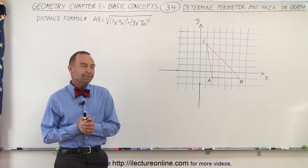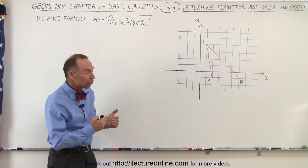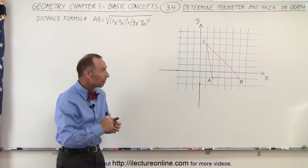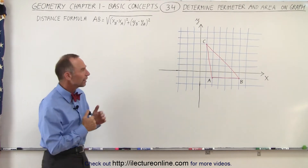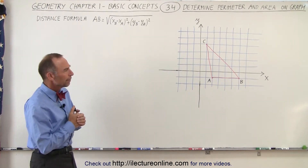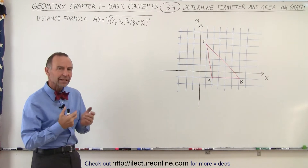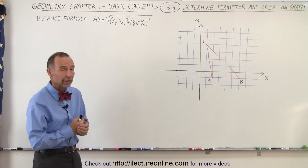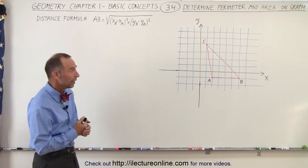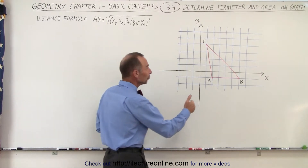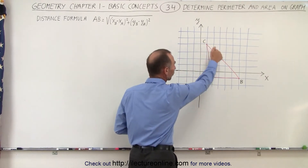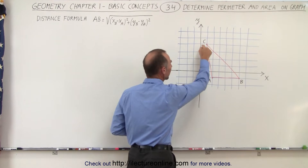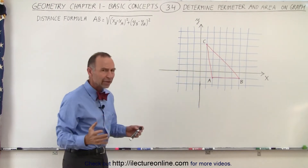Welcome to our lecture online. Here we're trying to find the perimeter and the area of this triangle drawn in red, but we're not given the length of the sides. We have to figure out what those are, and we're going to need to use the distance formula to find the length from B to C and the length from A to C.